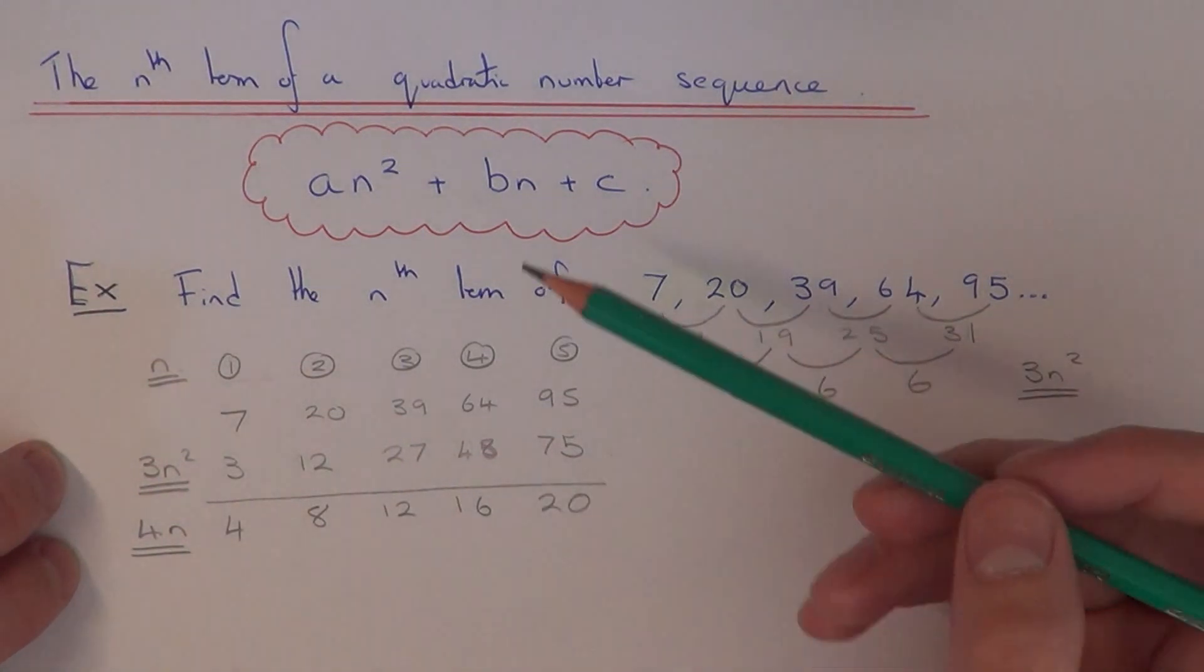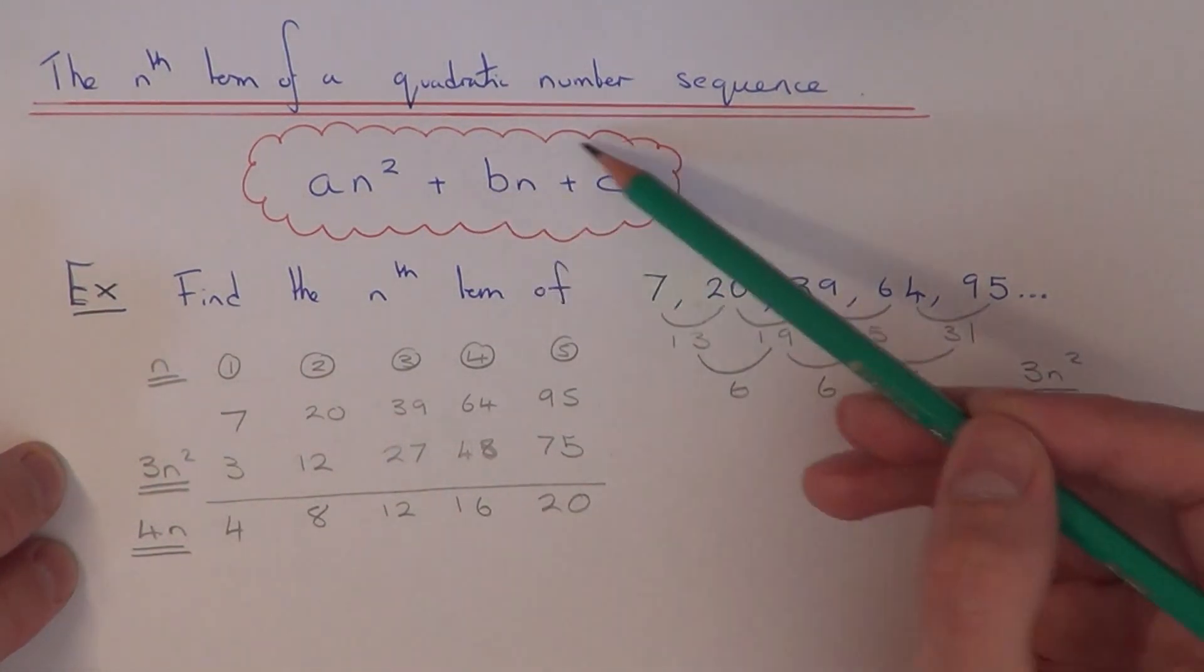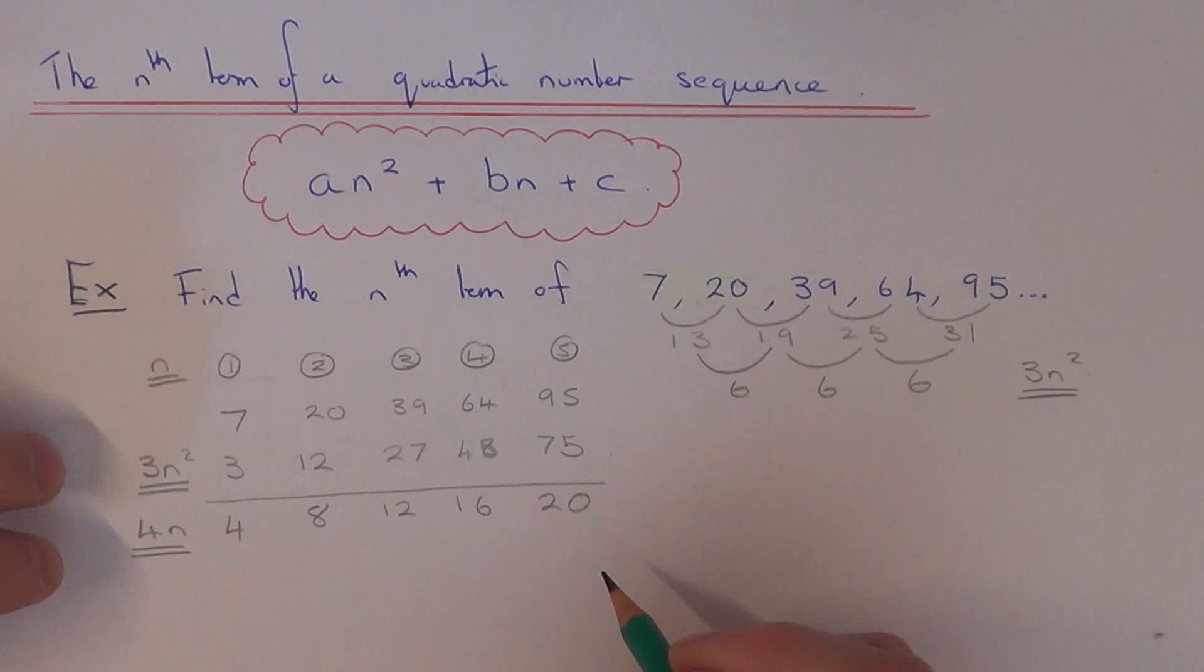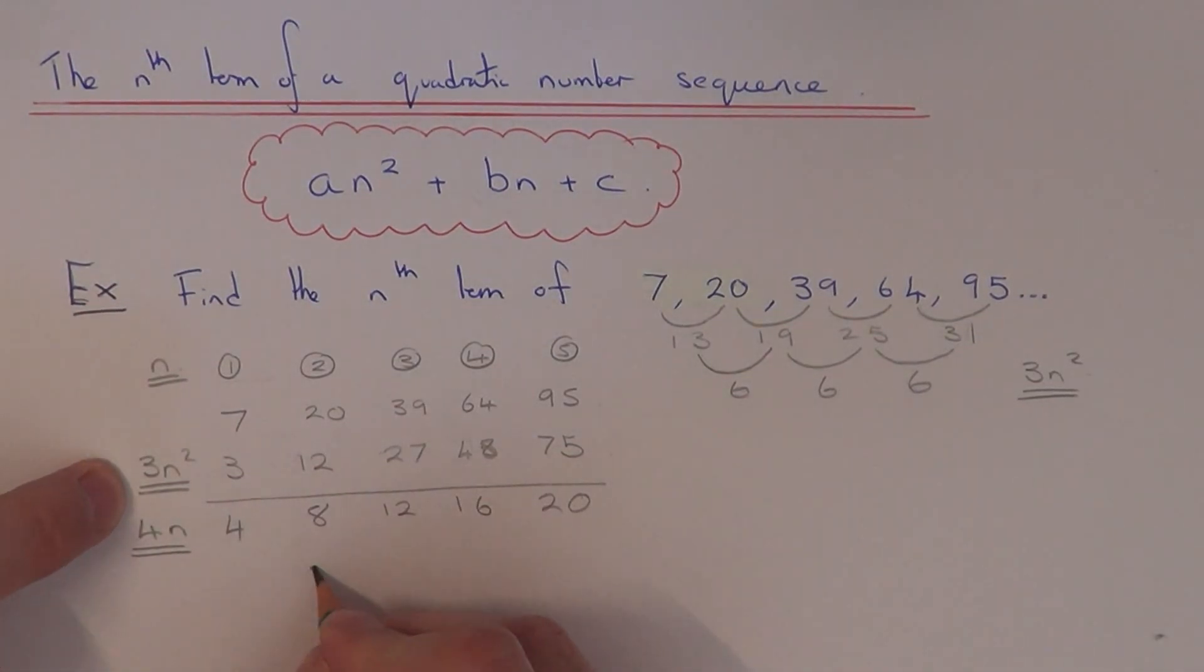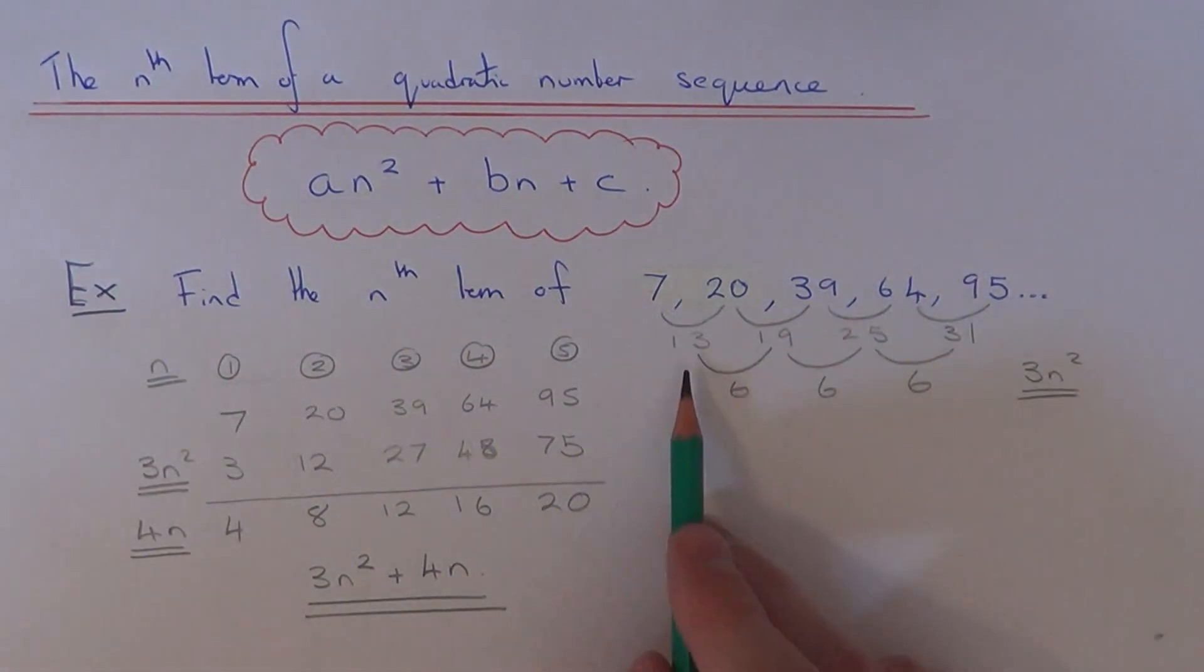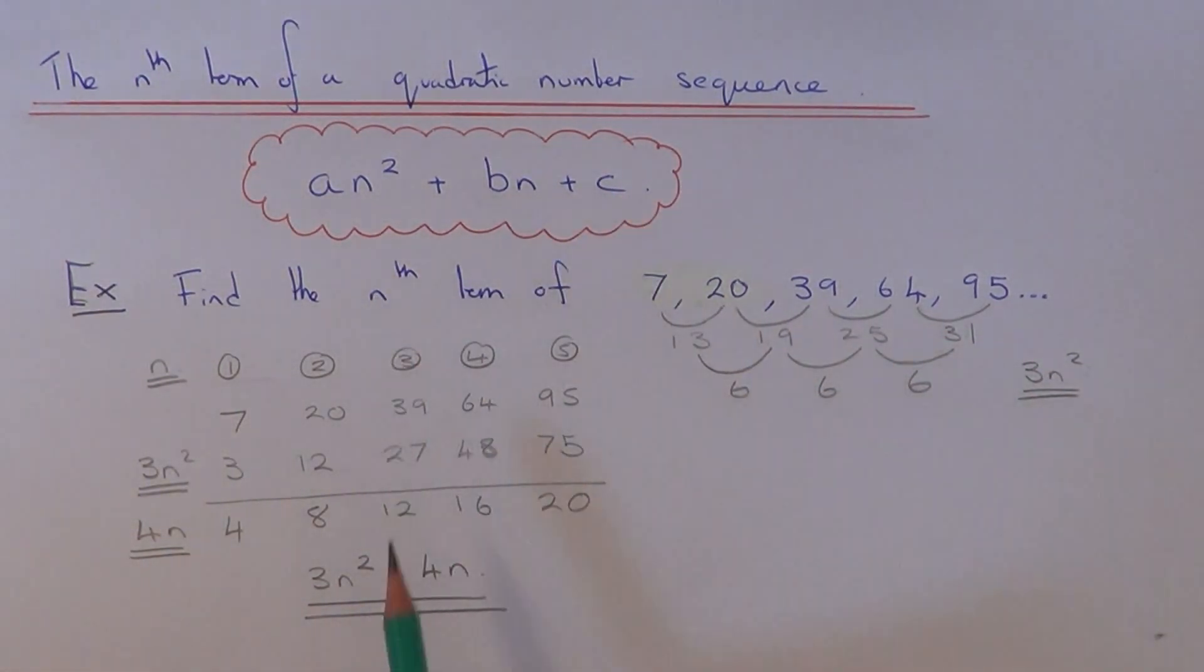So this will give us then this last bit of our quadratic formula. So our final answer will be 3n² + 4n. So this is the nth term of the sequence. So there's no value for c. So it's just a is equal to 3 and b is equal to 4. So thanks for watching.